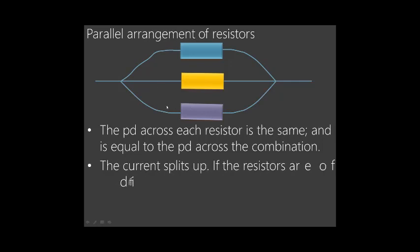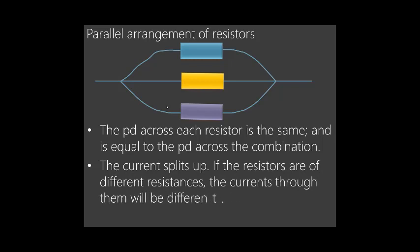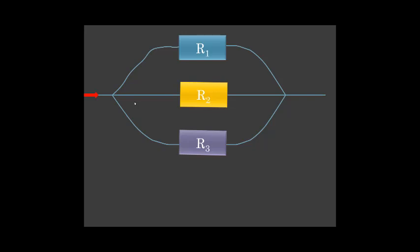In a parallel arrangement, the current splits up. When current comes in, it splits into the different resistors — some goes into R1, some into R2, and some through R3 — and then the currents combine again on the other side to form the total current I.